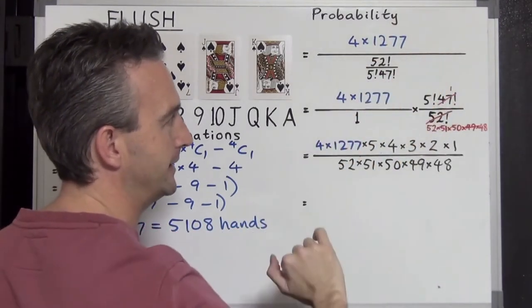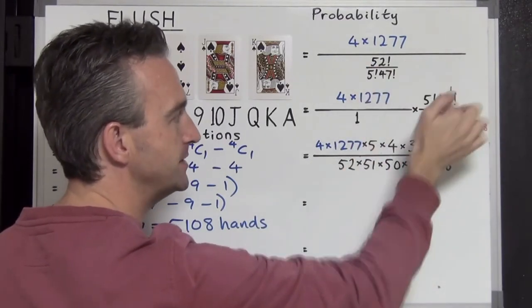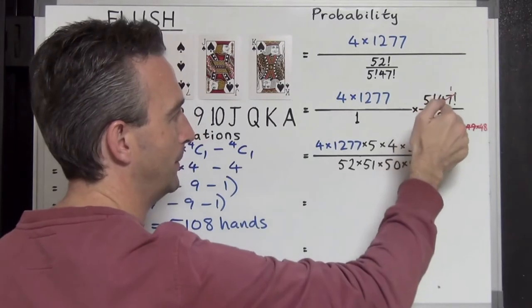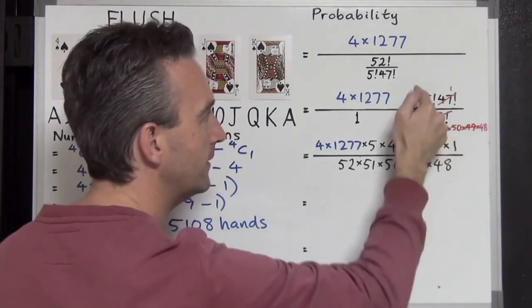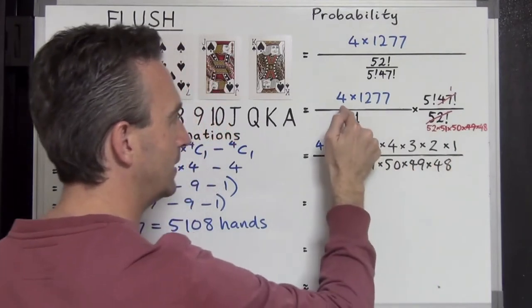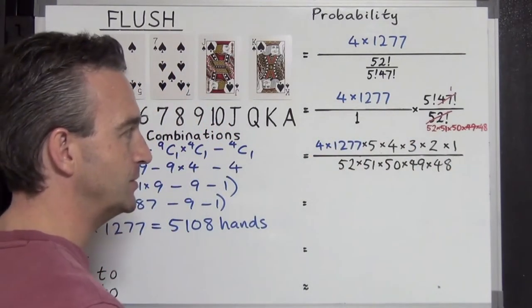Dividing by that, it's going to get inverted and multiplied and 47 factorial is going to cancel from the top and the bottom. Leaving 52 times 51 down to 48 on the bottom, factorial 5 over here, and our 4 times 1277 here. Now let's see what cancels.